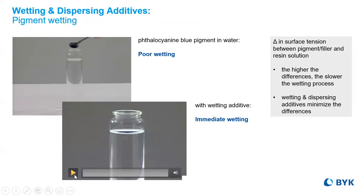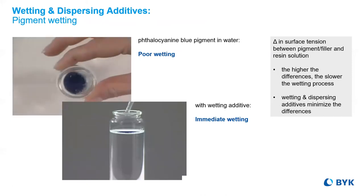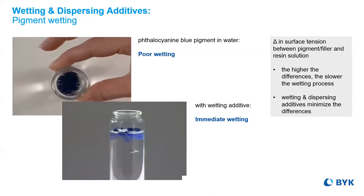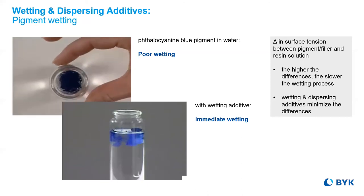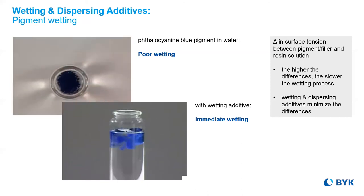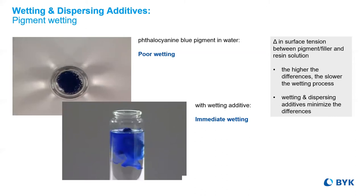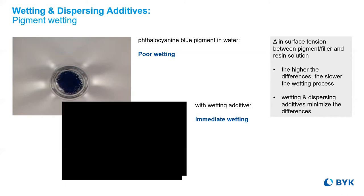Good wetting is classified as reducing the surface tension between the pigment and the system matrix. The greater the difference, the harder it is to wet the pigment. So clearly that is the reason why it's easier to wet titanium dioxide than phthalocyanine blue in water.